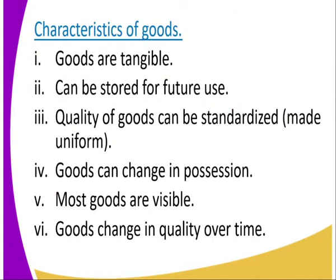Now let us look at the characteristics of goods. One: goods are touchable — you can touch them. Two: goods can be stored for future use. You can store a book to use it tomorrow, store a banana to eat tomorrow, or store a laptop for someone to use it next year.